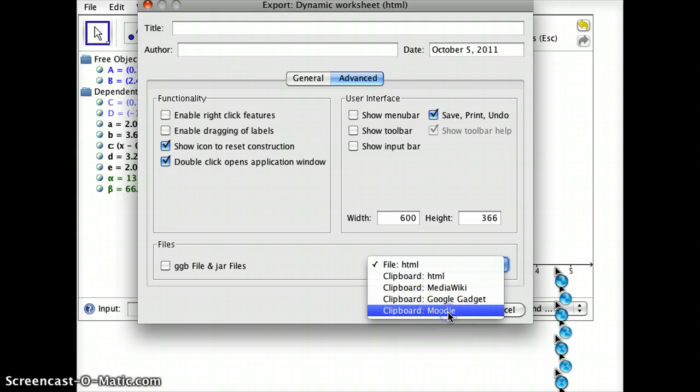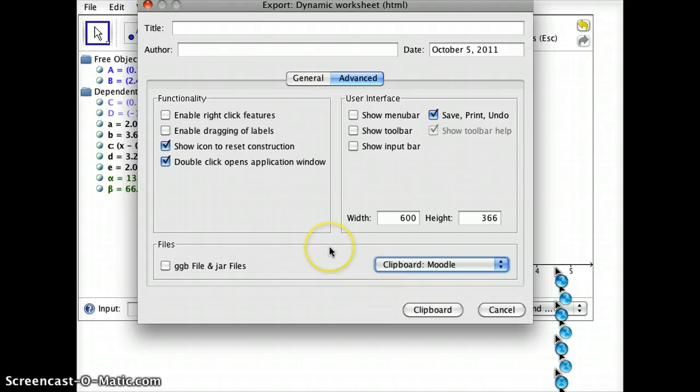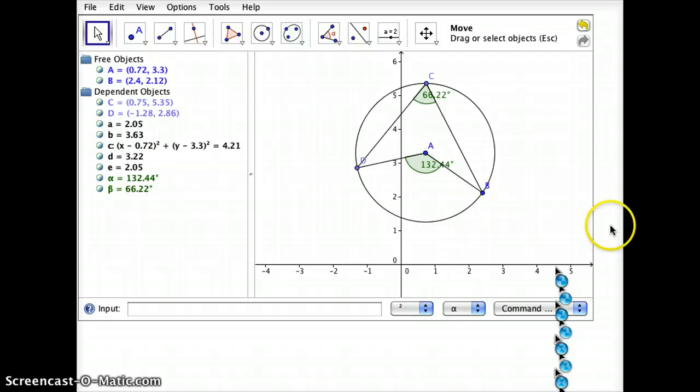When I choose Clipboard Moodle, that actually will take all of the information required to generate this applet and embed it within your computer's clipboard in a format Moodle can understand. So if I now push this Clipboard button, this entire applet is now ready to paste onto my Moodle page.